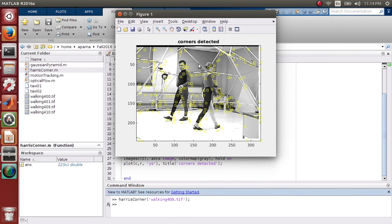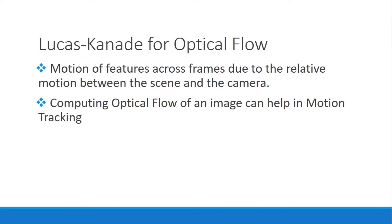This is the output obtained. Now that we've completed step one — using the Harris Corner detector to detect salient features in an image — we move to the tracking stage. For this, we use the Lucas-Kanade algorithm to calculate optical flow vectors. Optical flow is the motion of features across frames due to relative motion between the scene and the camera. When a pixel gets displaced due to motion, these vectors indicate the direction of displacement, and this computation helps us in motion tracking.